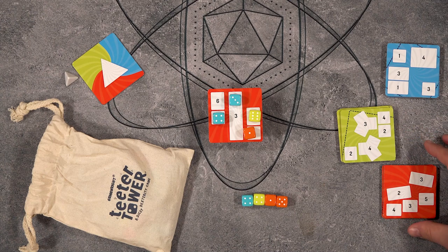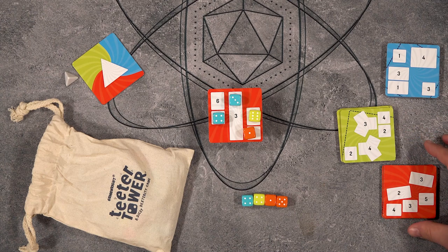On their turn, the active player will take four dice out of the bag and roll them. They will then choose one of the face-up tiles. You will carefully place the tile on the tower with the new tile lining up with the tile beneath it like this.